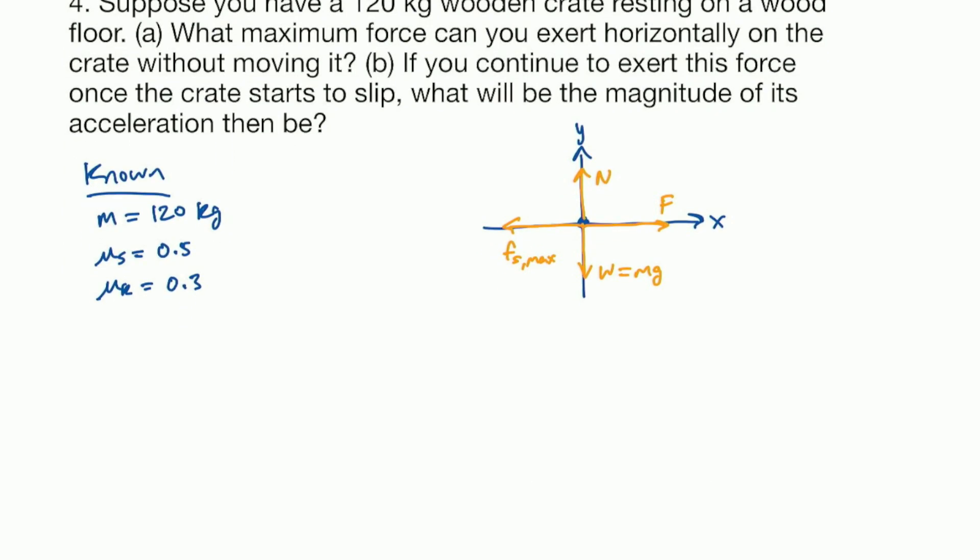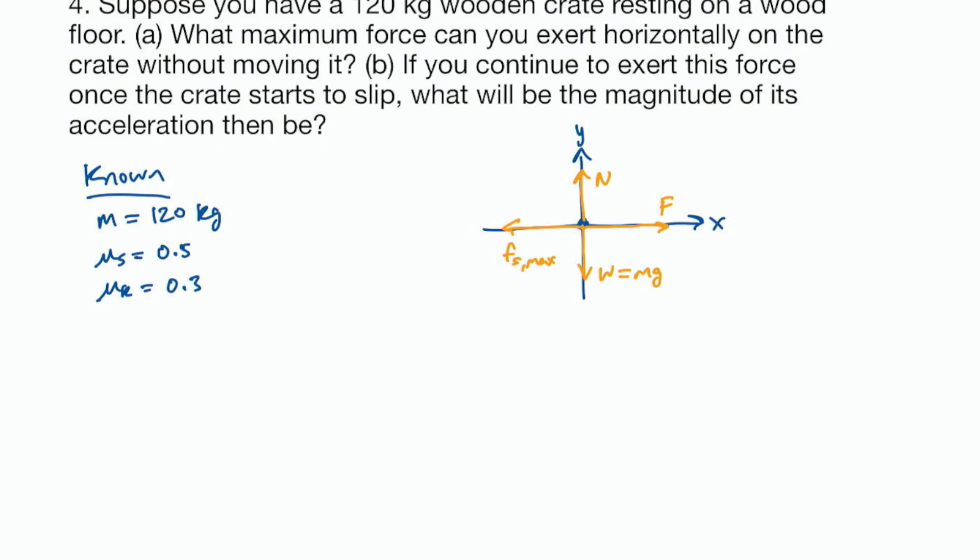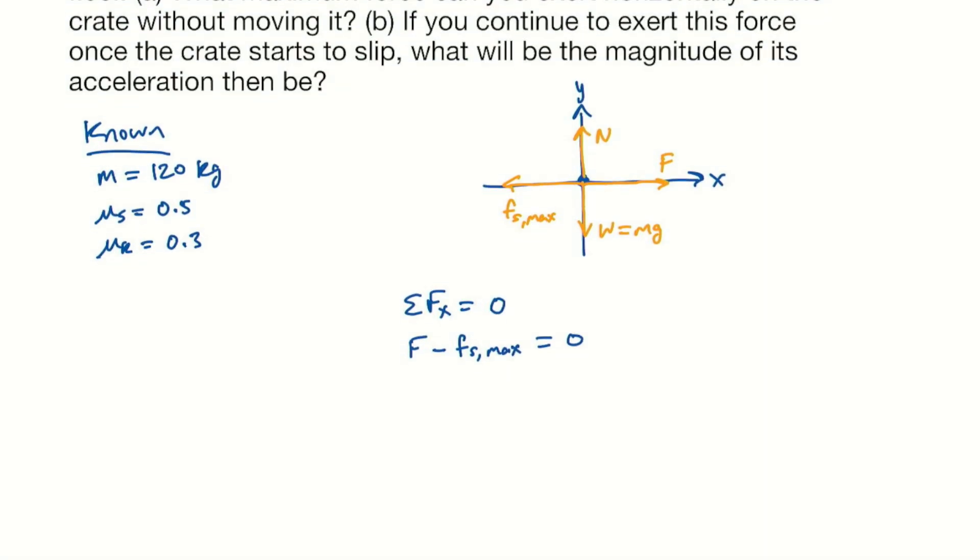Let's apply Newton's second law. We can sum the forces in the X direction, and since the crate is not moving, the sum of the forces will be zero. There's no acceleration. In the positive X, we have our push force, F. We have friction in the opposite direction, so we will subtract that. It will be F_s,max. Those are the only forces in the X direction, so they equal zero. So we see that our push force is equal to the maximum static friction.